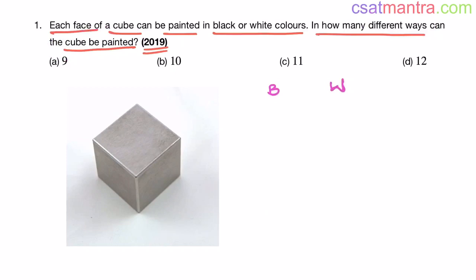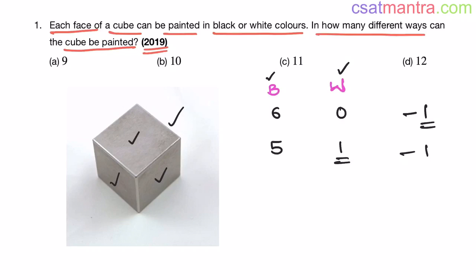Let's go case by case. We have 2 colors: black and white. Case 1: all 6 faces black, 0 faces white — this is 1 way. Case 2: 5 faces black, 1 face white — again 1 configuration, because if you paint any one face white and rotate the cube, all 6 positions look the same. So 1 way.